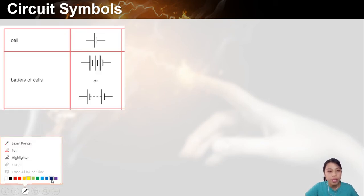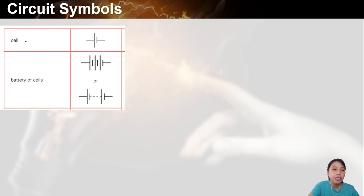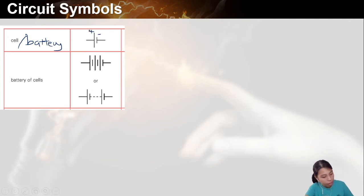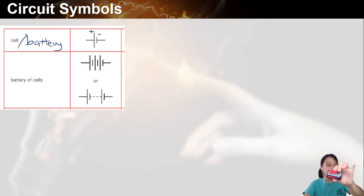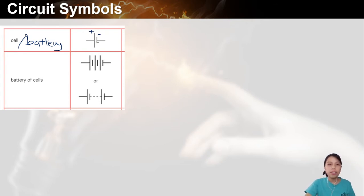So the cell — whenever you see 'cell,' this basically means battery. The longer side is the positive, the shorter side is the negative. So they call these cells — these batteries I was showing you last round. These are cells, aka batteries: positive, negative, two lines.